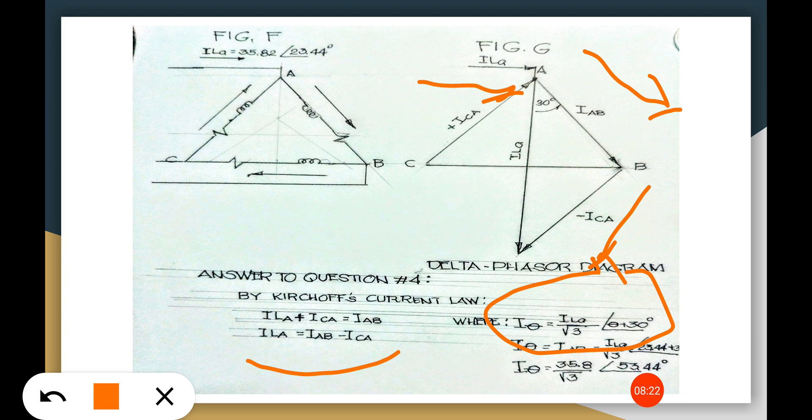So we have this ILa the magnitude of 35.8 square root of 3 with angle of 53.44. That answers question number four.